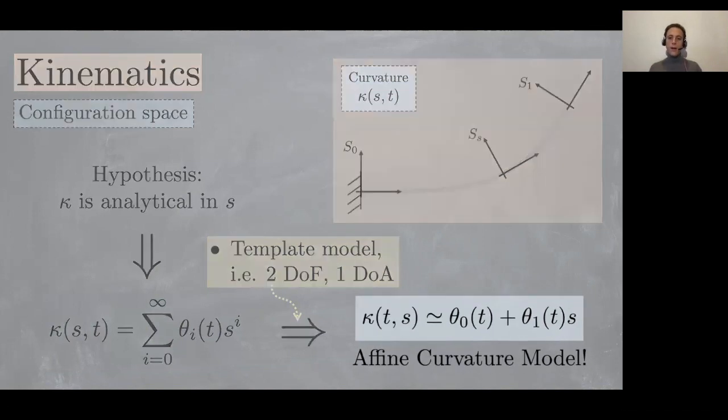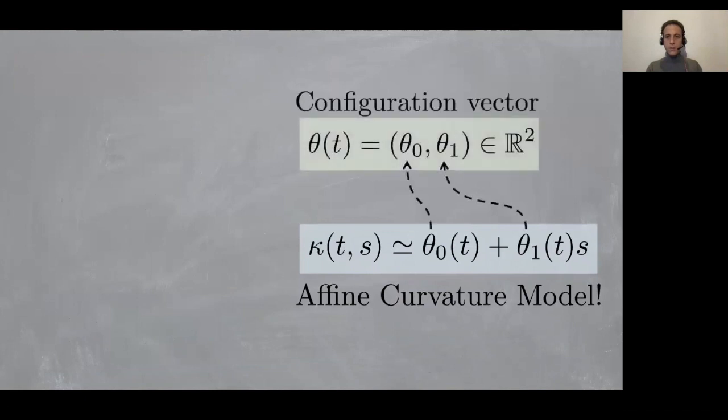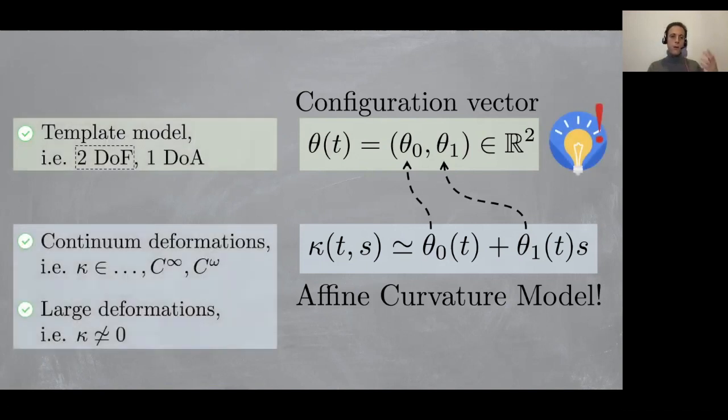We have now an affine curvature model, so the curvature is an affine function in s, the local coordinate, and it depends on these two parameters theta zero and theta one, which are now to be considered the configuration vector of our robot. This verifies all that we want: two degrees of freedom, continuous deformation, and possibly large deformation for large theta zero and theta one.